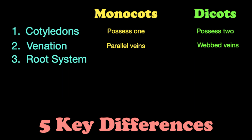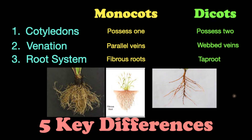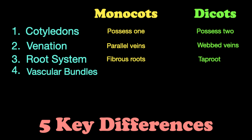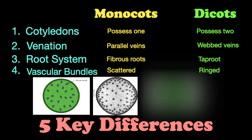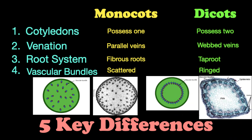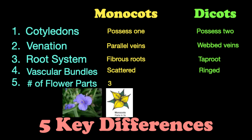Another key difference is that monocots have a fibrous root system, while dicots possess a tap root. Furthermore, monocots have scattered vascular bundles, and dicots have a ringed vascular bundle system — though this is only useful if you're looking at the cross section of a stem. Lastly, monocots tend to have flower parts in multiples of three, while dicots tend to have flower parts in multiples of four or five.